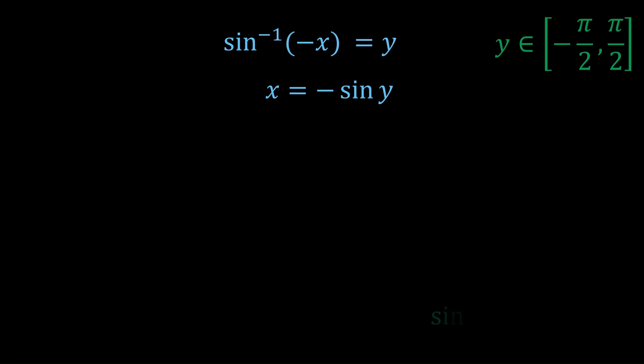And we know that sin is an odd function, so we can take the negative sin inside, giving us x equals sin minus y. Now we take sin inverse of both sides. And since minus y is in minus π on 2 to π on 2, this works out nicely.